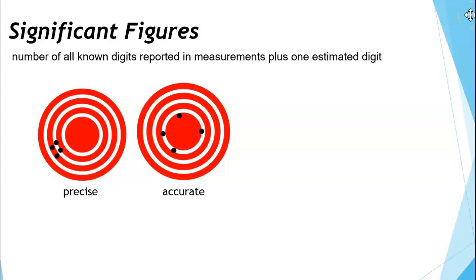The next thing we're going to discuss is significant figures. Significant figures basically indicate how precise a measurement is. Significant figures include the number of all the known digits reported in a measurement plus one digit that is estimated. The number of significant figures is indicative of how precise a measurement is — the more significant figures a measurement has, the more precise it is.